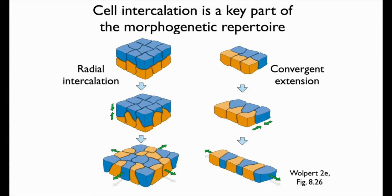The other kind of intercalation is convergent extension, where the orientation of the rearrangement is different. Cells undergo mediolateral changes in position to make an array of tissue that is narrower in one dimension but longer in the other. This convergent extension movement is very common in tissues that are undergoing explosive elongation.